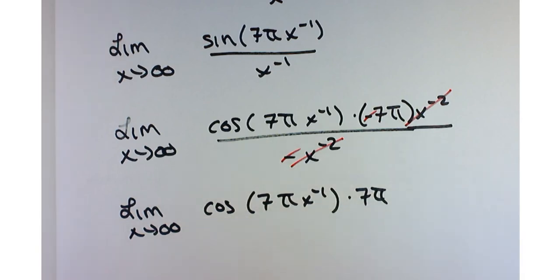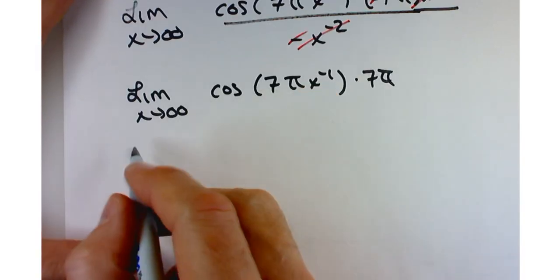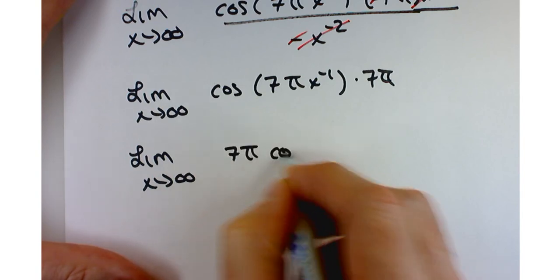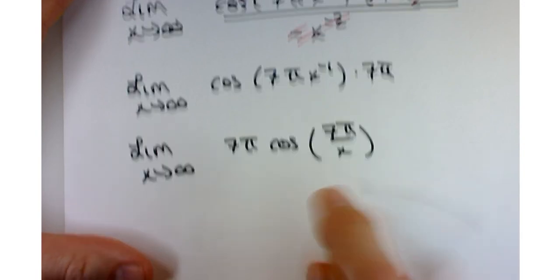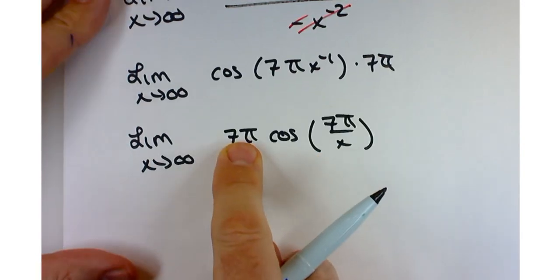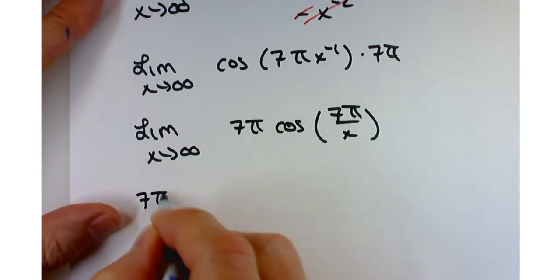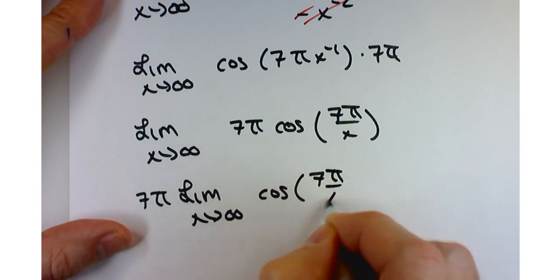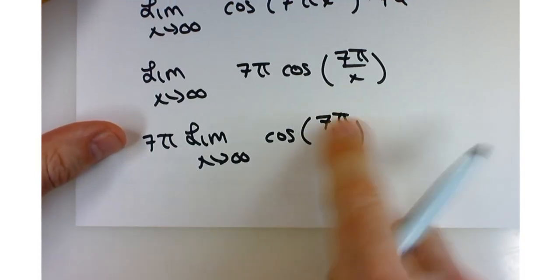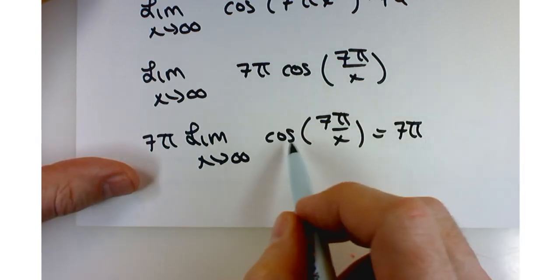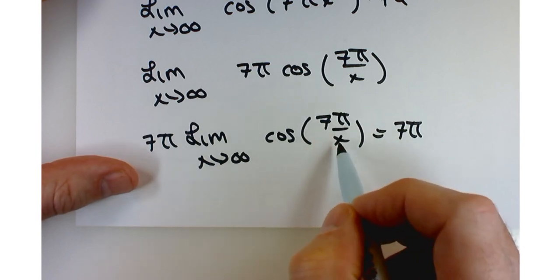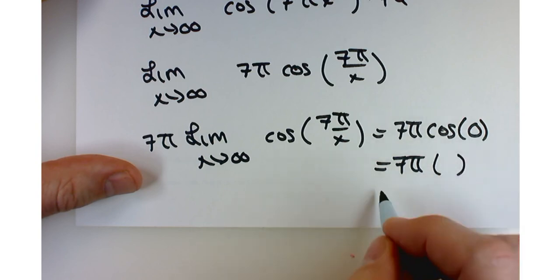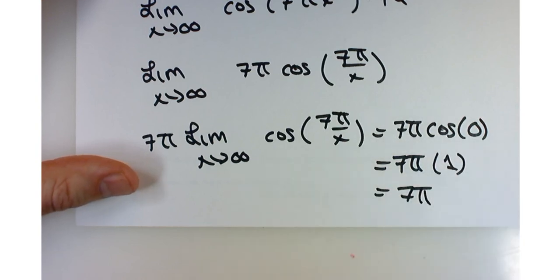All that's left is the limit as x approaches infinity of cosine of 7π times x to the negative first, times 7π. Moving 7π out as a constant factor, we get 7π times the limit as x approaches infinity of cosine of 7π over x. As x approaches infinity, 7π divided by something increasingly large goes to 0. And the cosine of 0 is 1. So the answer is 7π.